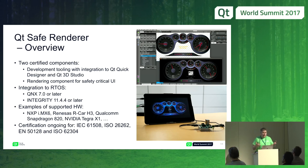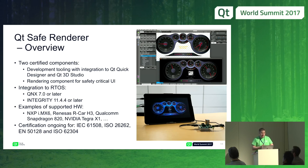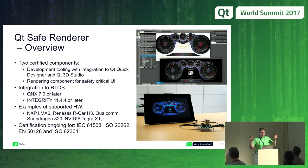There are two components. The tooling component hooks into our regular Qt Quick Designer or Qt 3D Studio, extracts part of the design from there, and puts it into a parameter file, which the renderer component then displays. We have done integration to two different operating systems so far — QNX and Integrity. In principle, any real-time operating system is possible. The certification activities now ongoing cover IEC 61508, ISO 26262 for automotive, EN 50128 for railway safety, and ISO 62304 for medical.